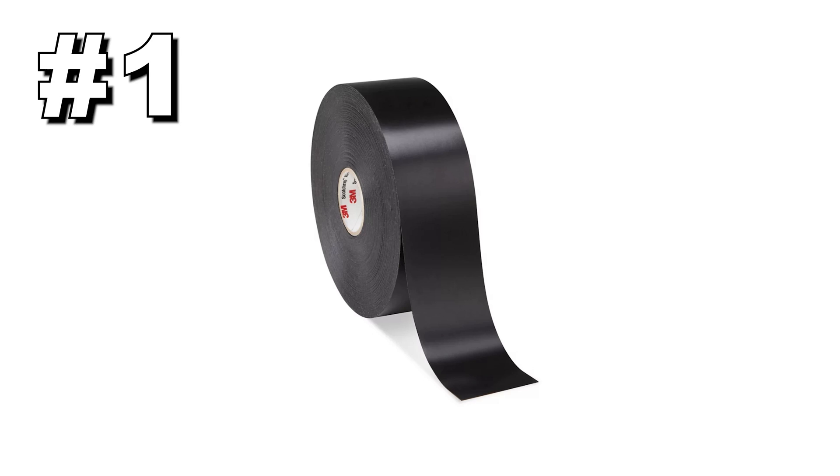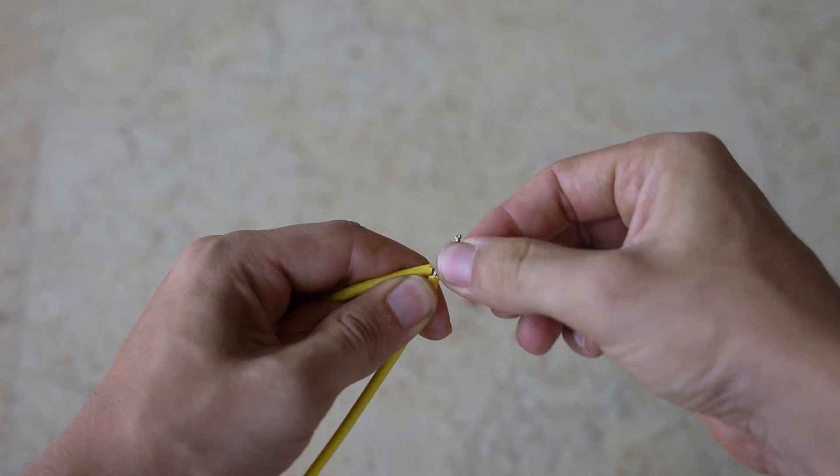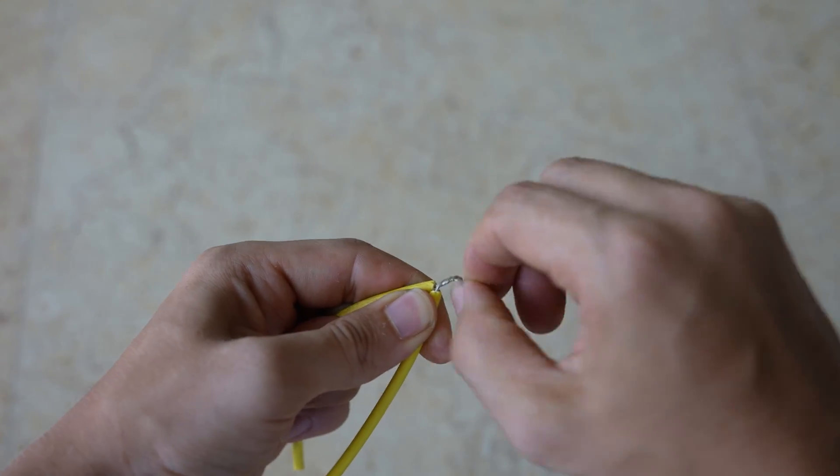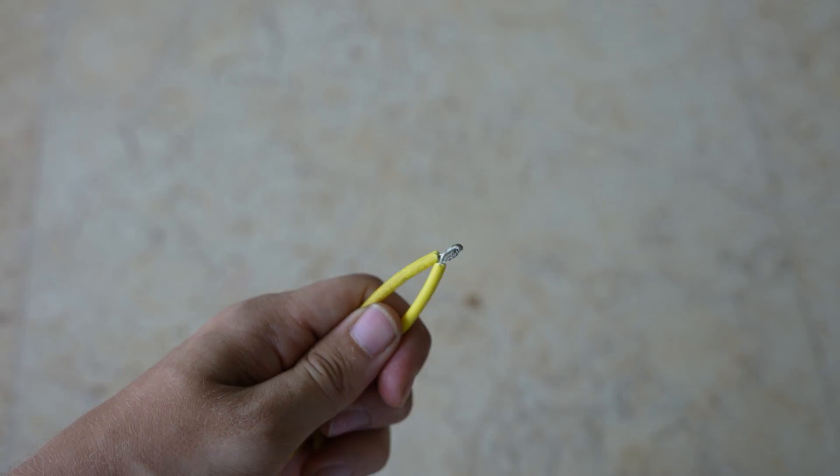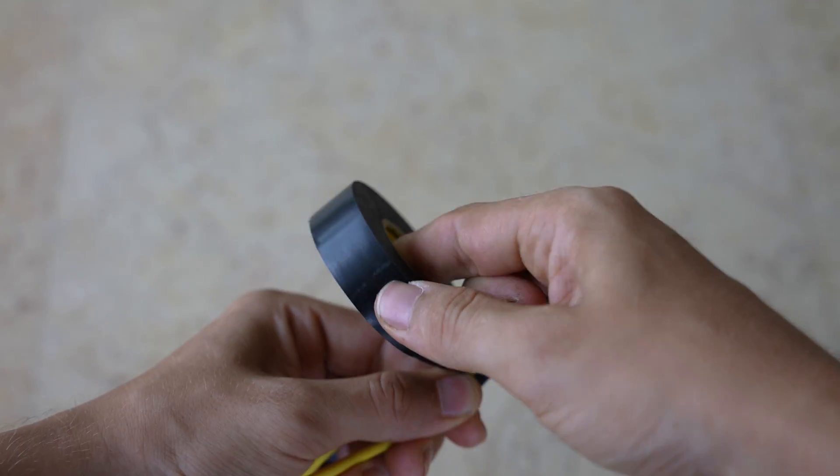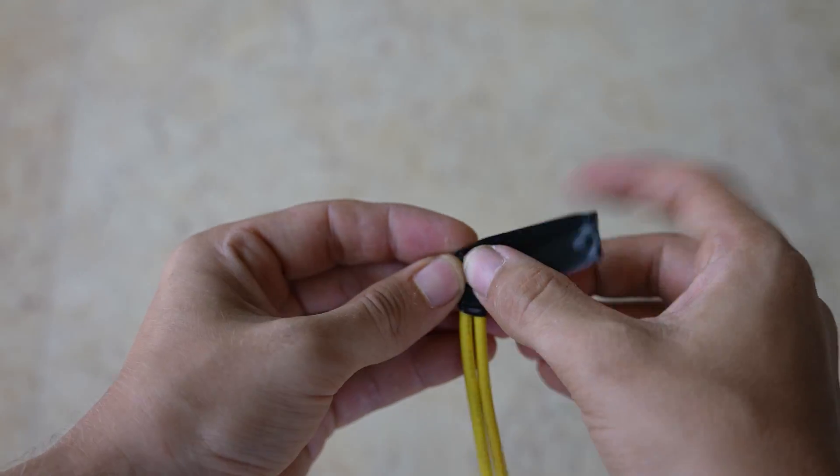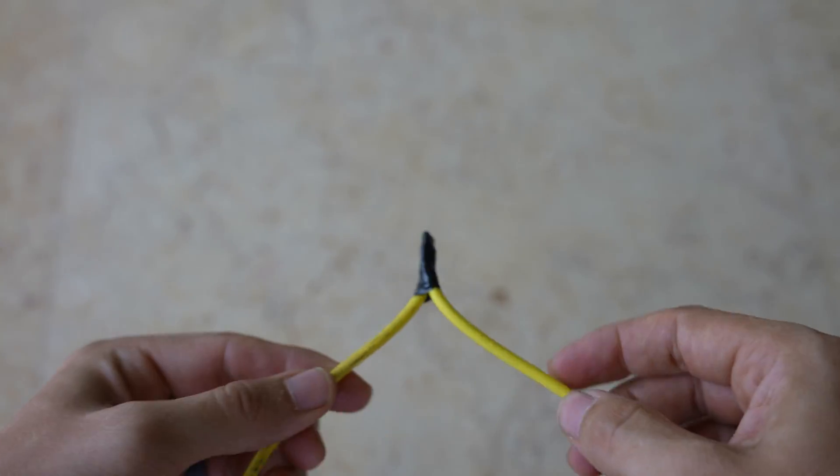Method number 1. All you need is electrical tape. Start by stripping about half an inch of wire insulation from the wires that you will be connecting. Twist the bare ends together and fold them in half. Lastly, tape the connection real good and you are done. This method should only be done temporarily or for testing purposes. It wouldn't be a good idea to leave it like that permanently.